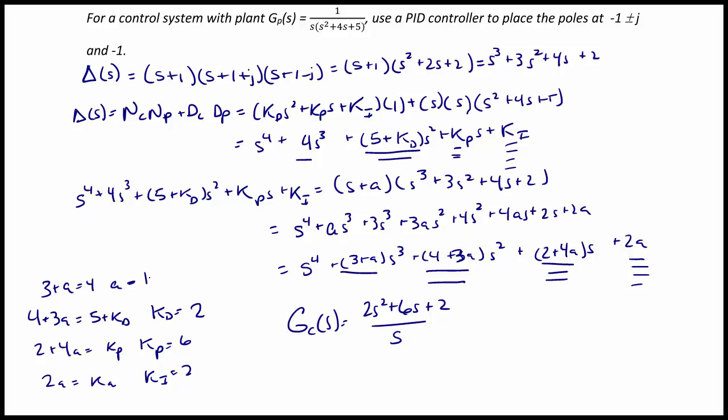And we know that our additional pole is actually at negative 1. And our closed loop control system would be 2s squared plus 6s plus 2 over s to the 4th plus 4s cubed plus 7s squared plus 6s plus 2. And our open loop transfer function k gc of s times gp of s is equal to 2s squared plus 6s plus 2 over s squared times s squared plus 4s plus 5.